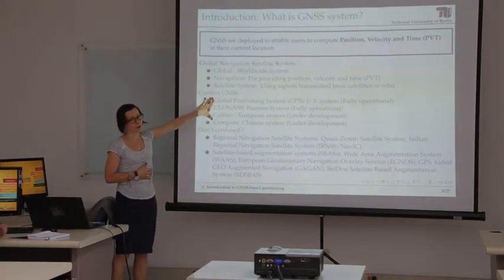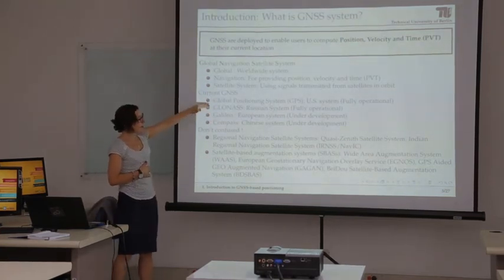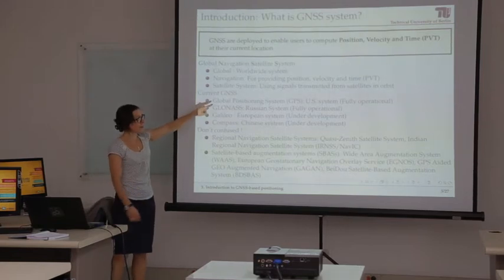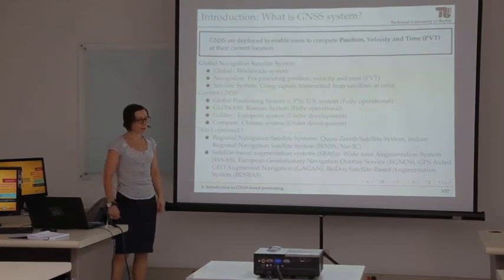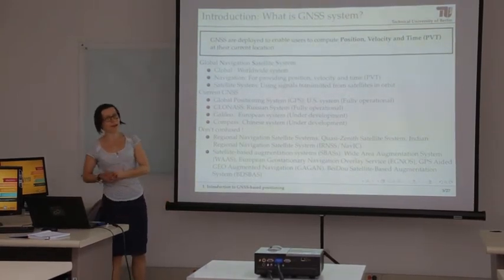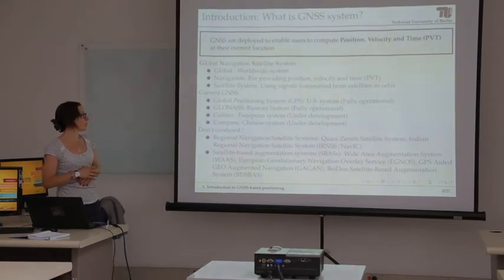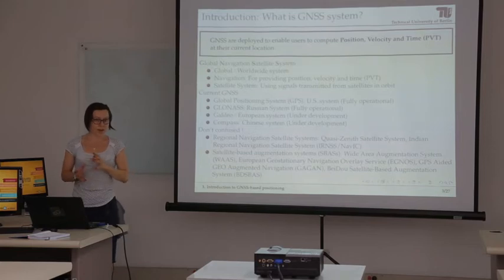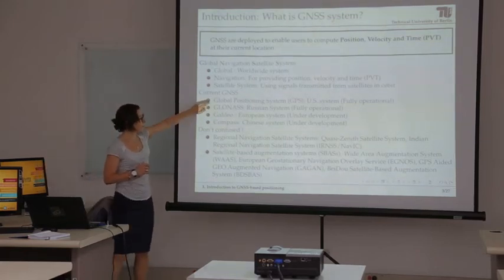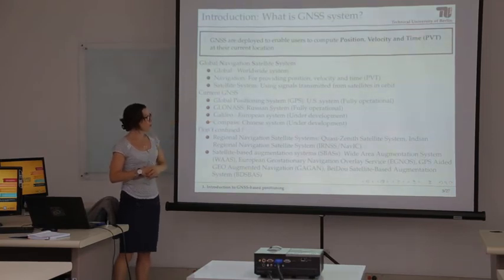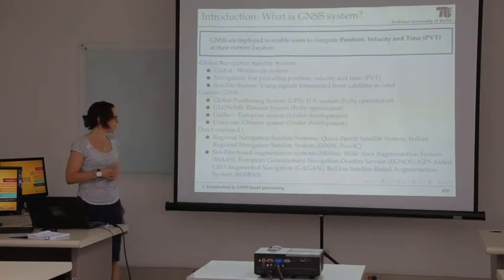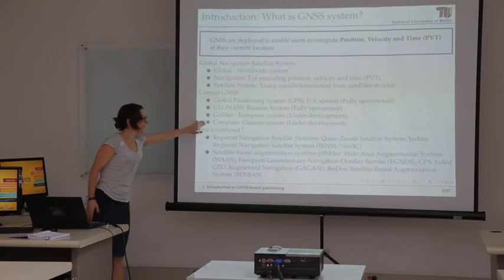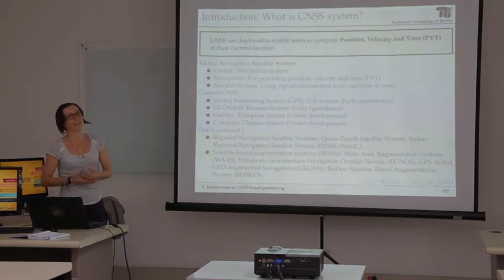Currently we have four GNSS systems. The most famous is GPS, which was the first system and is fully operational — position based on GPS is available at any time and any location. Another fully operational system is the Russian GLONASS system, which has a slightly different geometry. We also have two systems currently under development: the European Galileo system — it's a never-ending story — and the Chinese COMPASS system, also an underdeveloped global system.